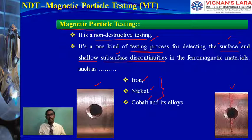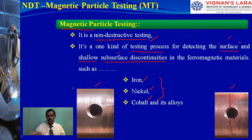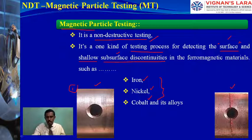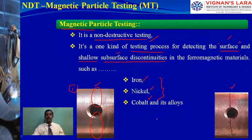Magnetic particle testing is a process for detecting surface and shallow subsurface defects in ferromagnetic materials such as iron, nickel, cobalt, or alloy combinations of these. Importantly, the material must not be paramagnetic or diamagnetic — it must be ferromagnetic.